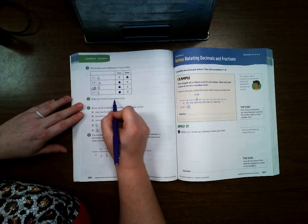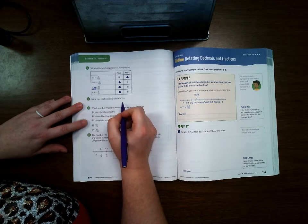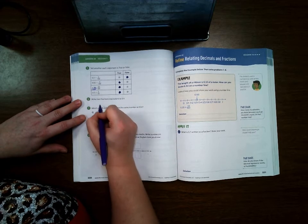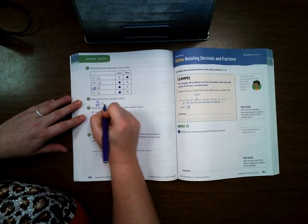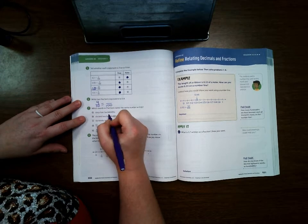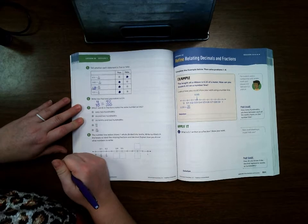Write two fractions equivalent to four tenths. Well, the easiest one to do is 4/10, and then to make an equivalent fraction, if we give it a hundred, we can make 40/100.